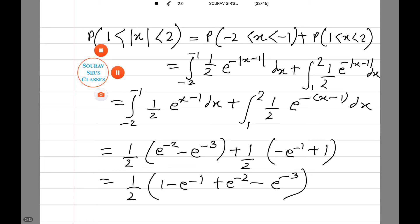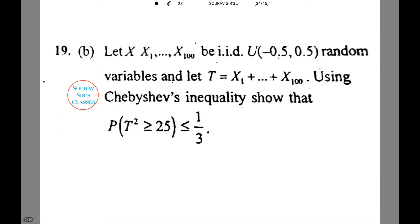Moving on to another question. Now we have a very important question on Chebyshev's inequality. We are given a random variable x such that x1, x2, ..., x100 are i.i.d. We are given u between minus 0.5 and 0.5, and let T equal x1 plus x2 plus x3 plus ... plus x100.